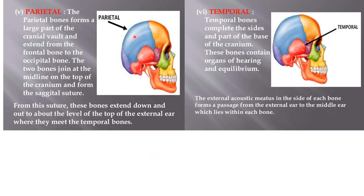The parietal bone forms the large part of the cranial wall and extends from the frontal bone to the occipital bone; there are two parietal bones on either side. The temporal bone is present below the parietal bone and forms the lateral walls of the cranium. The temporal bone also contains the organs of hearing and equilibrium.